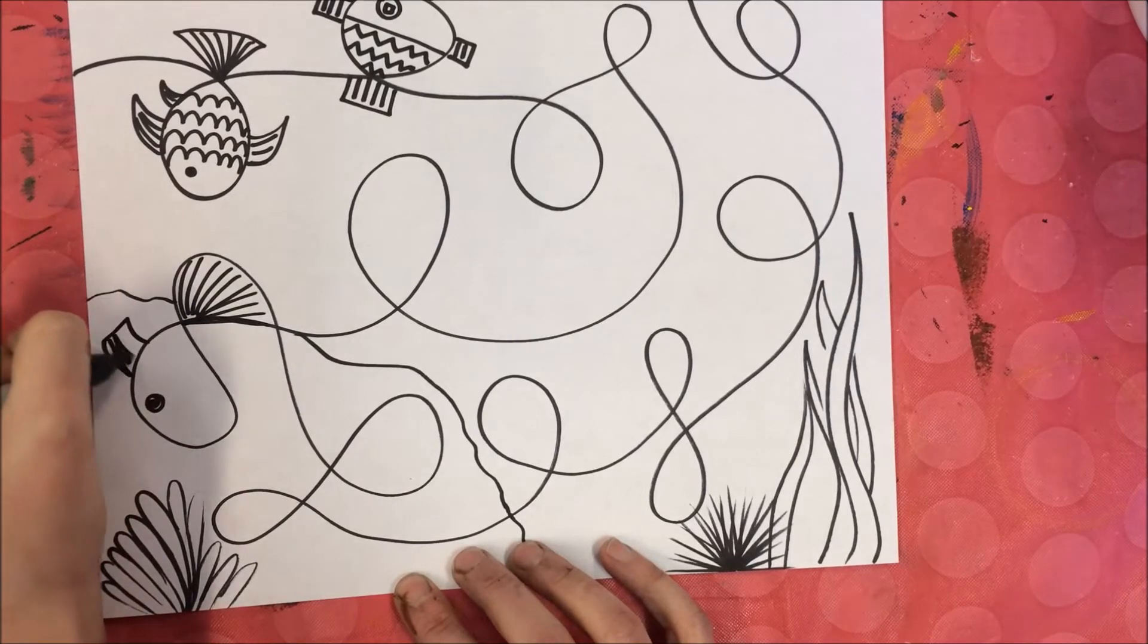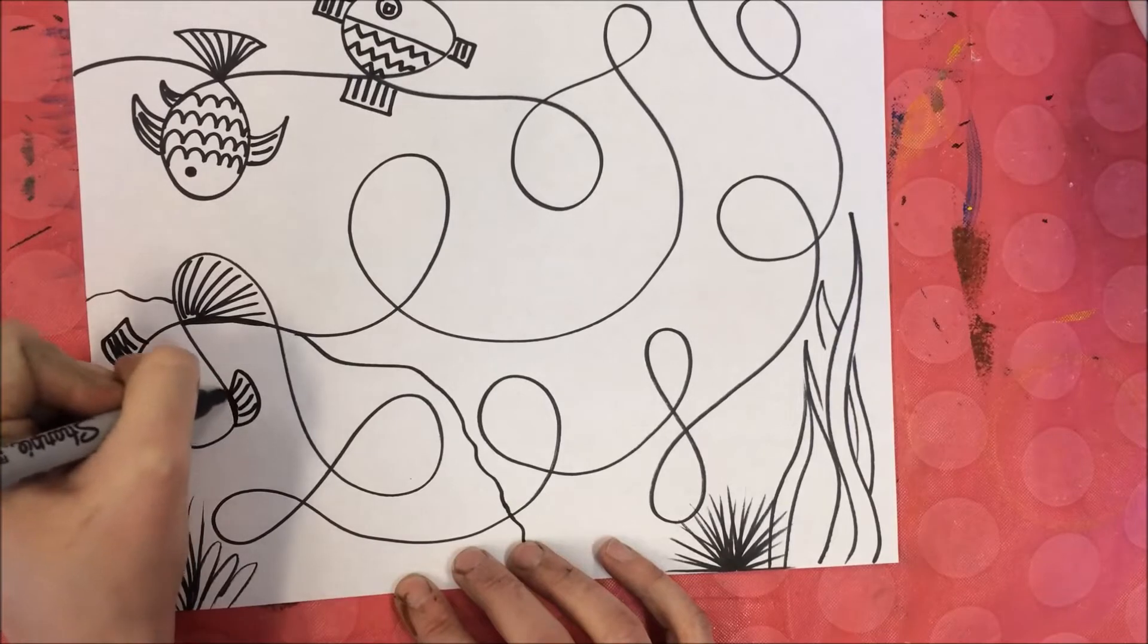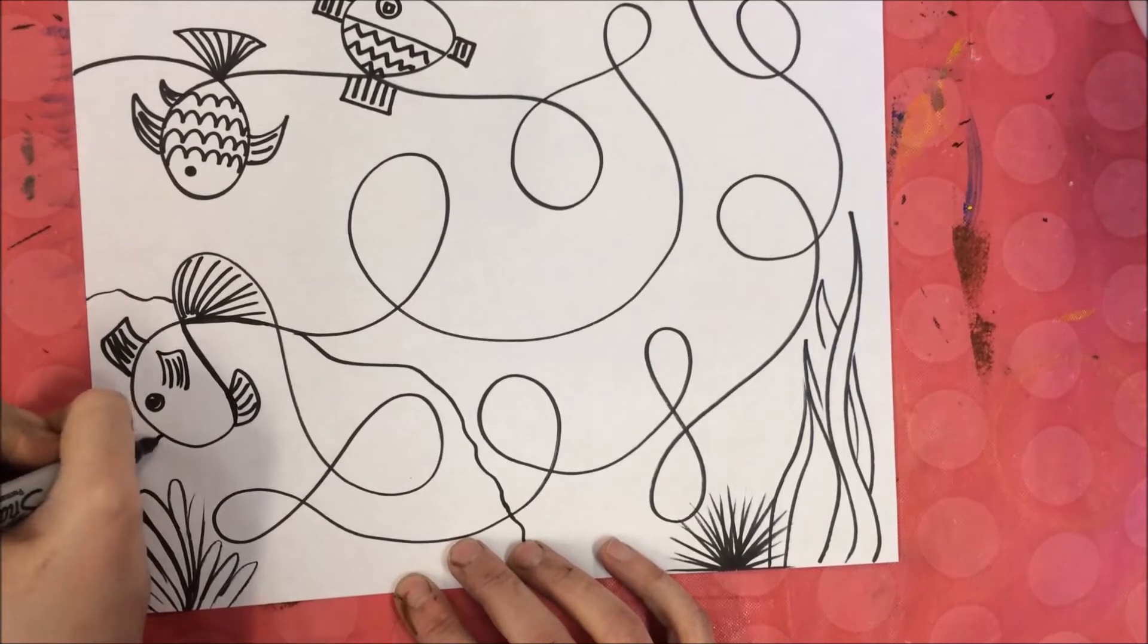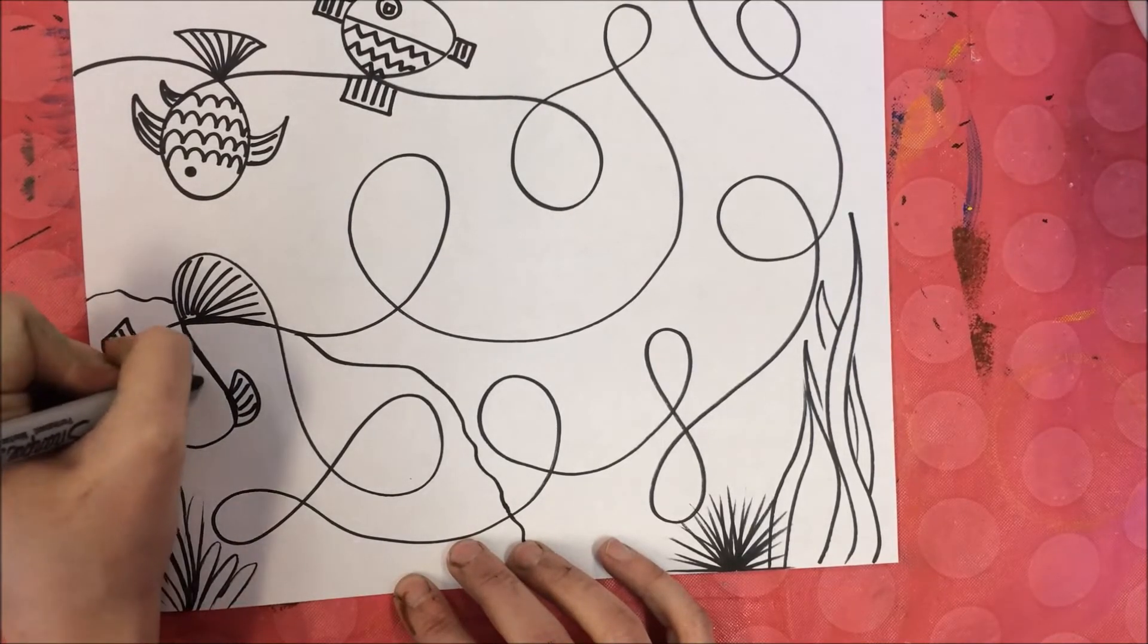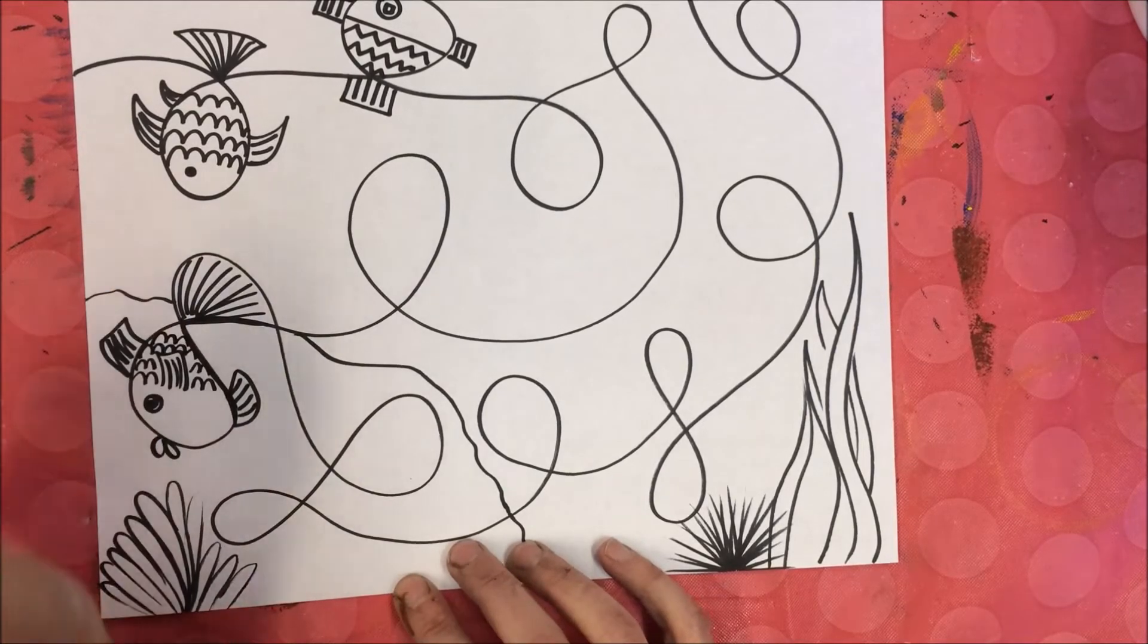If you make a mistake with your marker, just go back in and figure out a way to fix it. Figure out something that you can do to make it look like it's not a mistake. Make it look like it was done on purpose. These are just some fun fish that you can make.